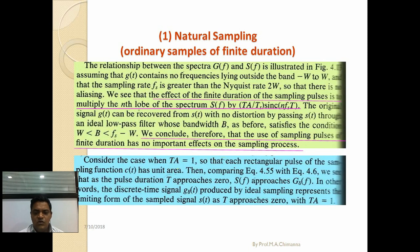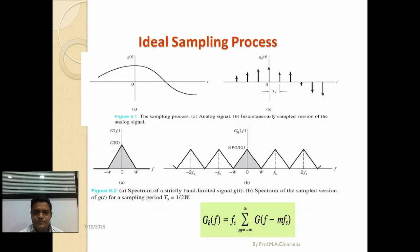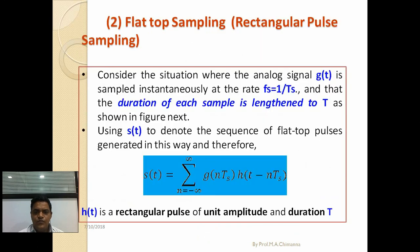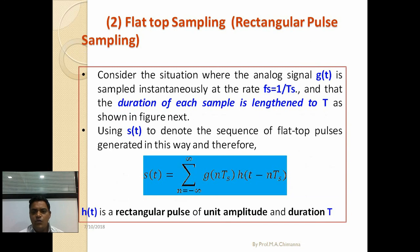Flat top sampling is rectangular pulse sampling. Consider the situation where the analog signal g(t) is sampled instantaneously at rate f_s = 1/T_s, and the duration of each sample is lengthened to τ.